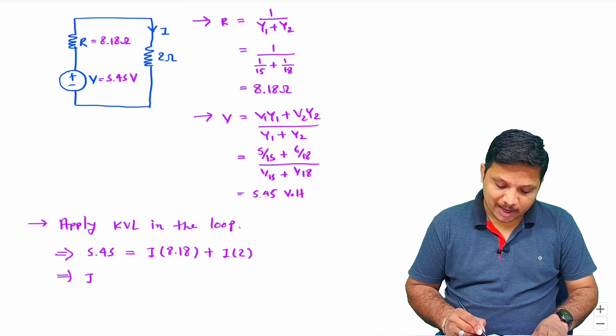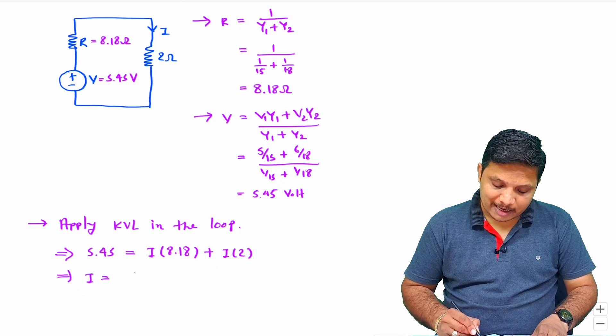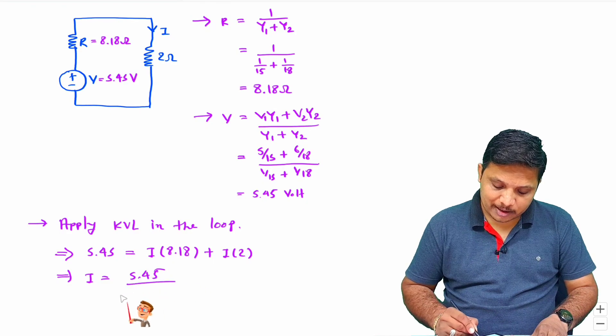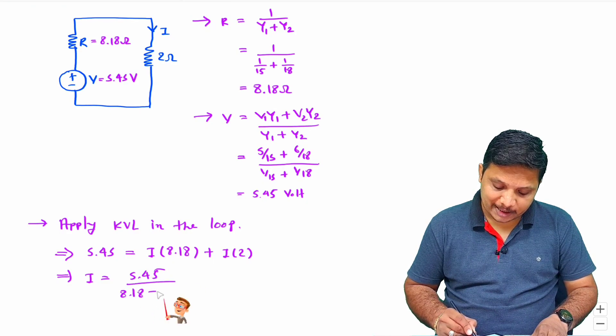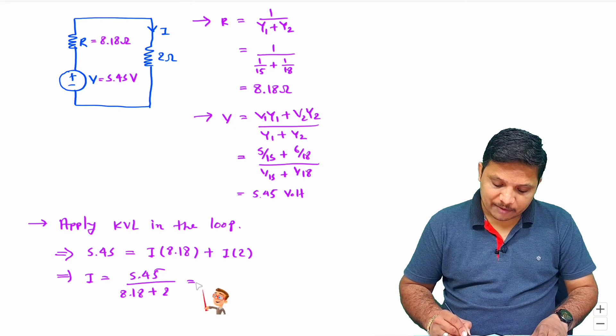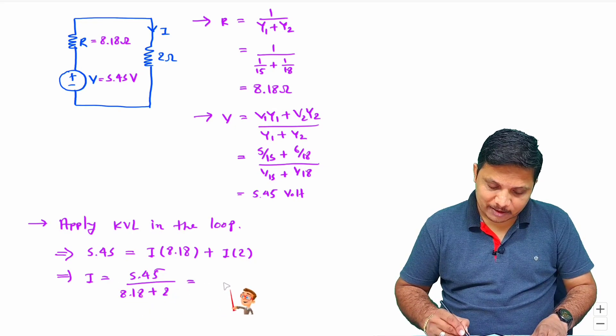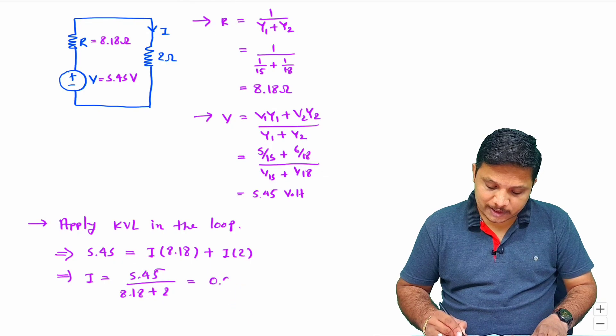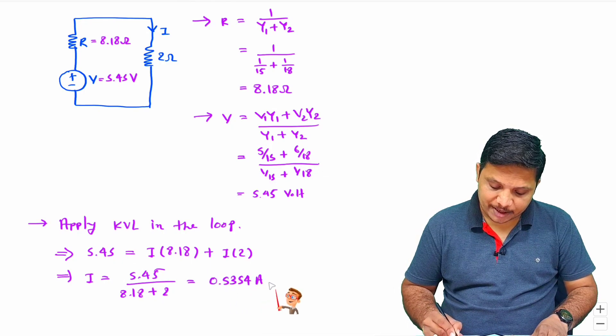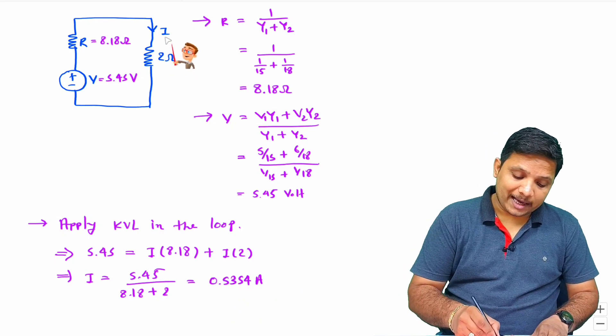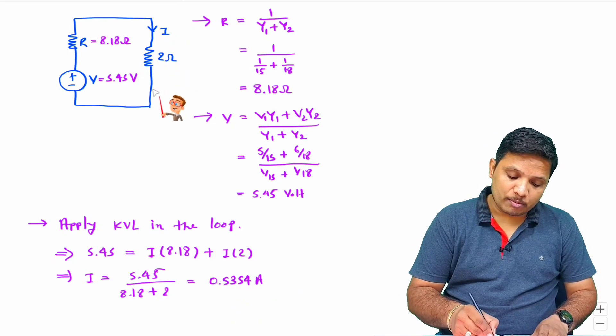So if I wanted to have value of current I, that will be 5.45 divided by 8.18 plus 2. If you solve this, you will get current value I equals 0.5354 ampere. This is how I can identify current passing through this 2 ohm resistor.